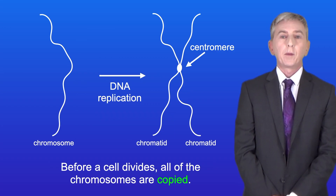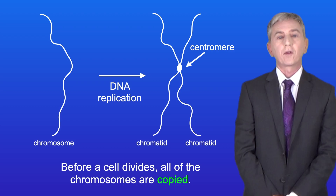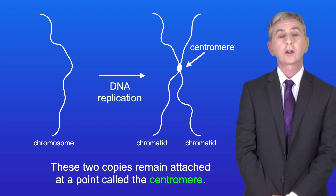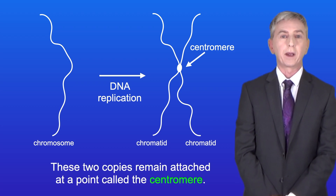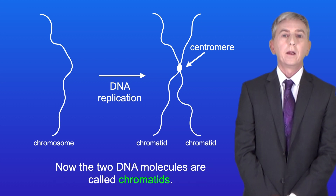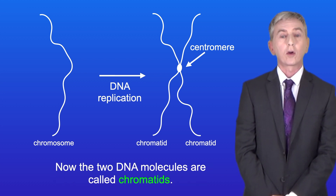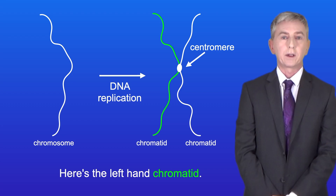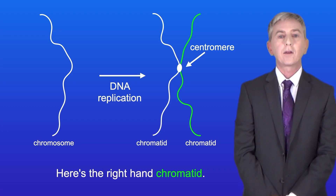Now before a cell divides, all of the chromosomes are copied. These two copies remain attached at a point called the centromere, and the two DNA molecules are called chromatids. Here's the left-hand chromatid and here's the right-hand chromatid.